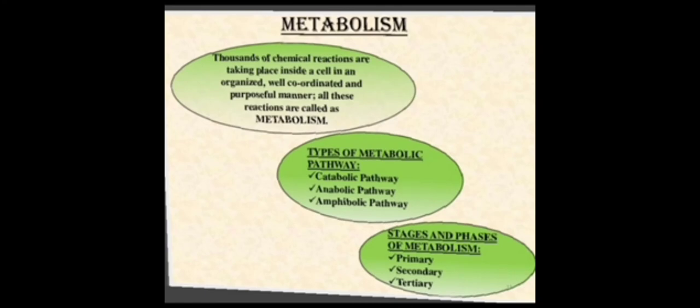Now come to the next term: metabolism. What is metabolism? Thousands of chemical reactions take place inside the cell in an organized, well-coordinated, and purposeful manner, and all these reactions are called metabolism. The metabolic pathways are divided into three: catabolic pathway, anabolic pathway, and amphibolic pathway.